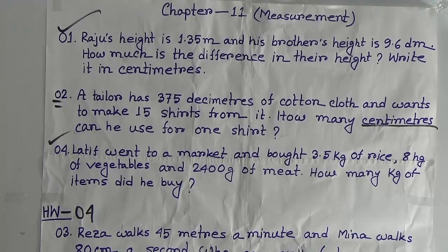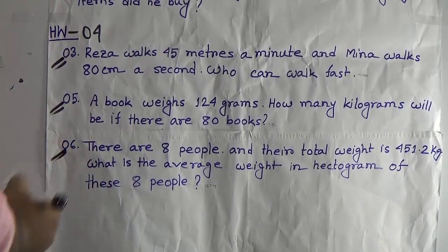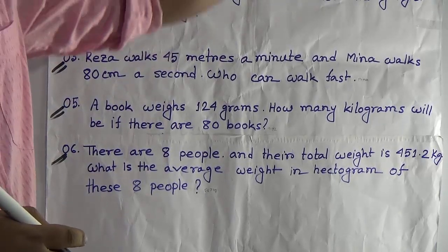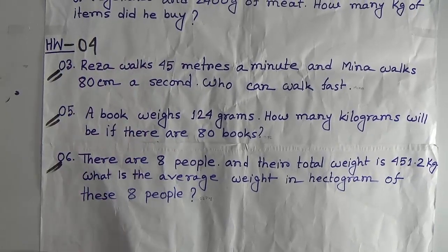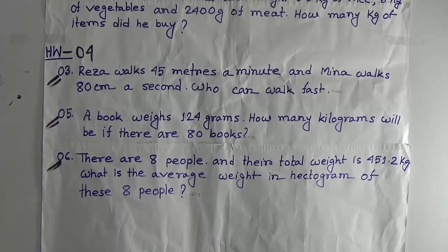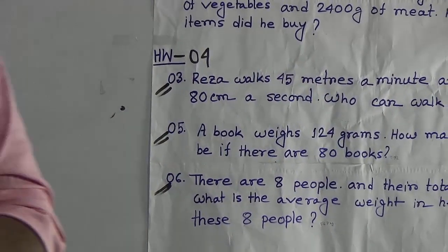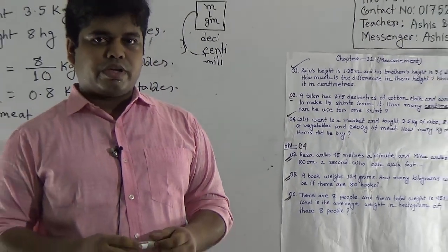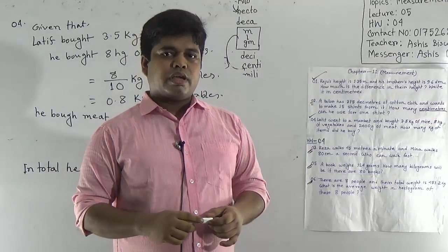My dear students, this is our today's class work. As homework, you shall solve question numbers 3, 5, and 6 in Chapter 11A, Measurement. Based on your homework, DiaryMarks, CTMarks, and SBMarks will be given. Do your homework in your assigned HW copy and submit it regularly. Your guardians or any other person can submit your homework at our school library between 10 AM to 4 PM every Sunday.